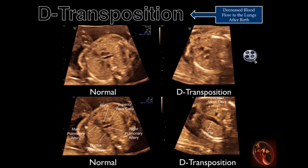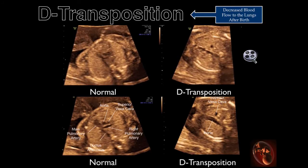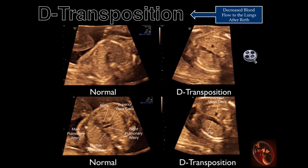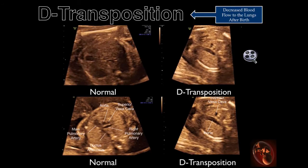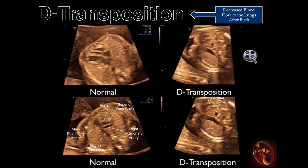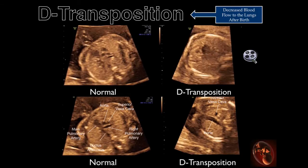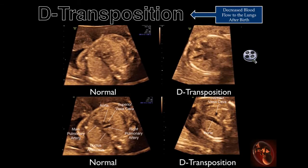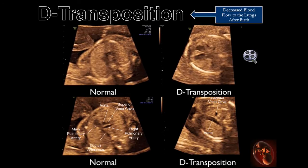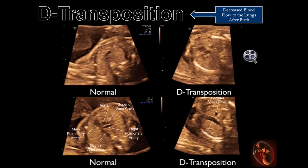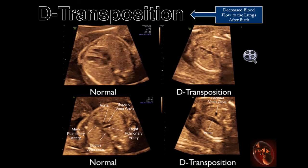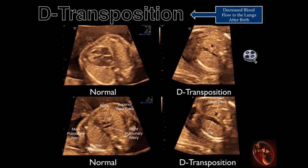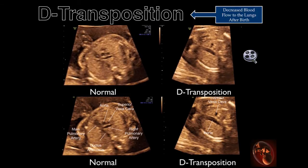Three, the three-vessel view is very different between the normal fetus and one with D-transposition. The labeled image at the level of the three-vessel view illustrates the position of the aorta and the absence of the main pulmonary artery in the fetus with D-transposition when compared to the normal fetus.